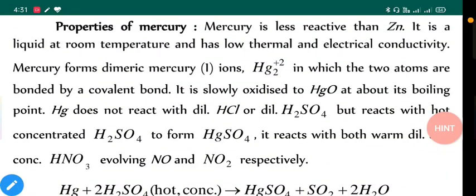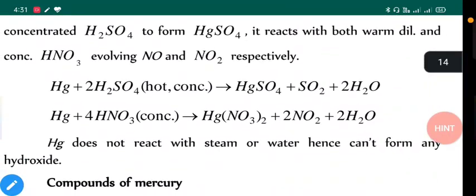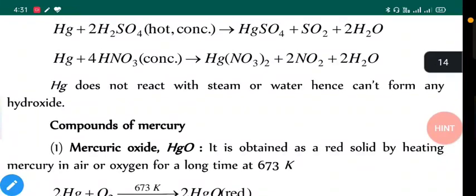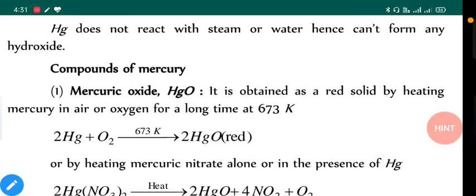Hg does not react with dilute HCl or dilute H₂SO₄, but reacts with hot concentrated H₂SO₄ to form HgSO₄. It reacts with both dilute and concentrated HNO₃, evolving NO and NO₂ respectively as we can see in these reactions. Hg does not react with steam or water, hence can't form any hydroxides.